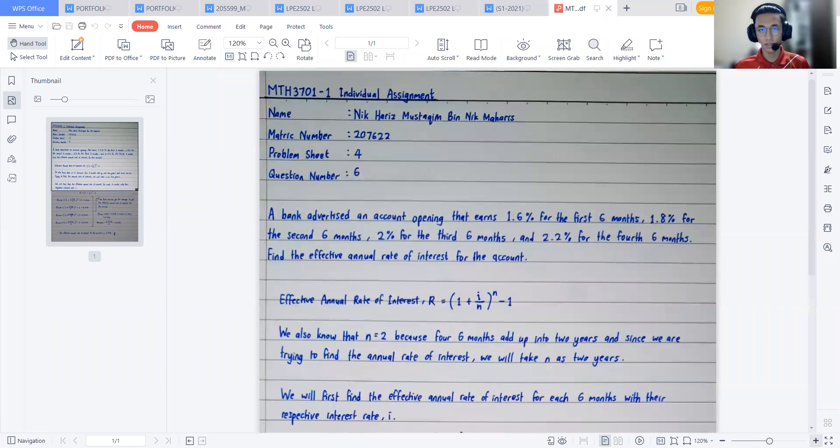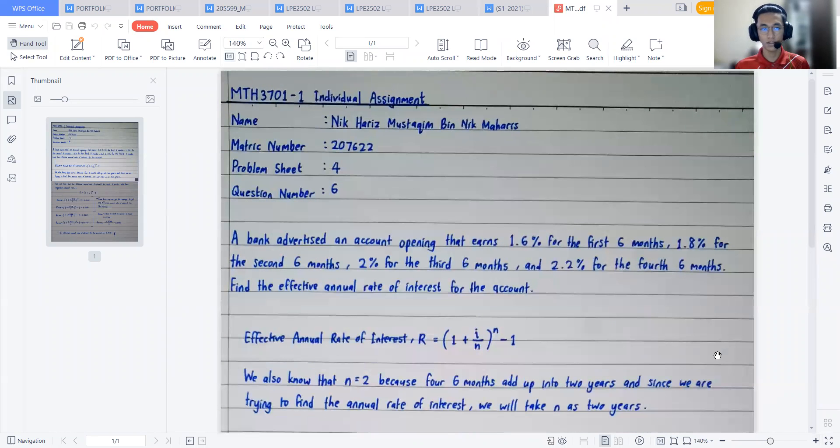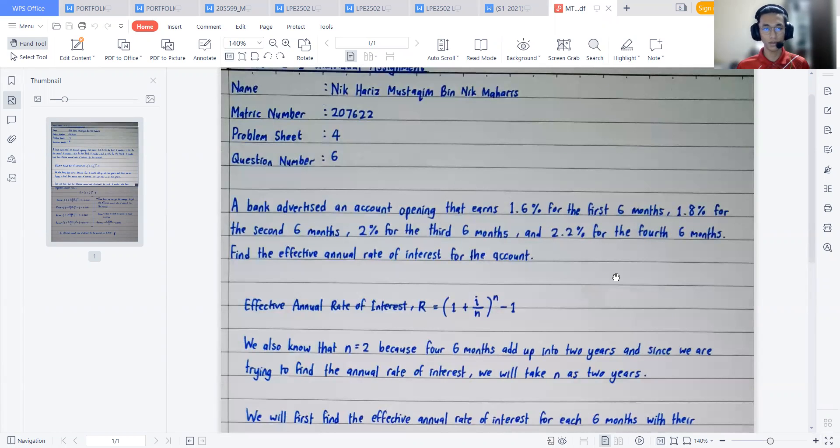As you can see, this is the question given to me, which is question number six from problem sheet four. A bank advertised an account opening that earns 1.6% for the first six months, 1.8% for the second six months, 2% for the third six months, and 2.2% for the fourth six months.